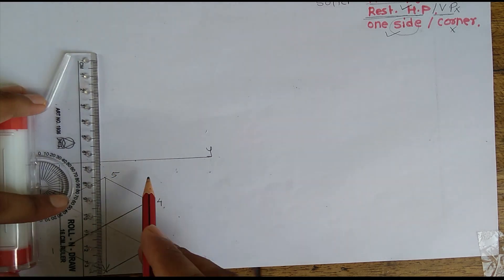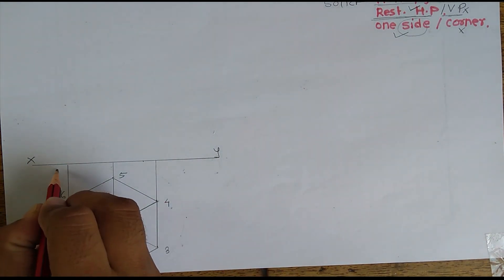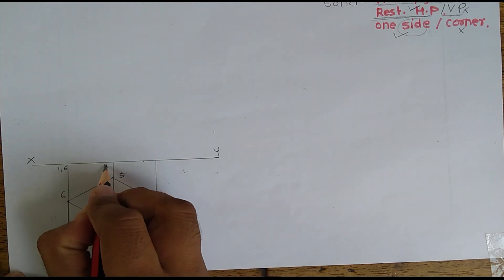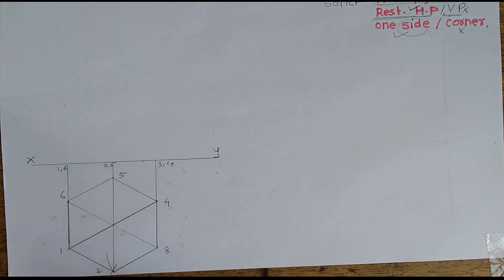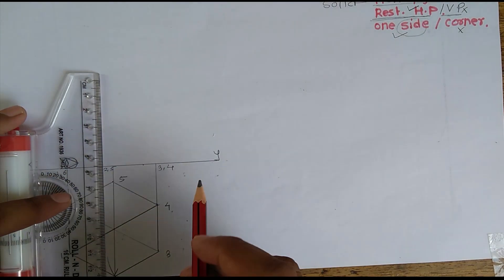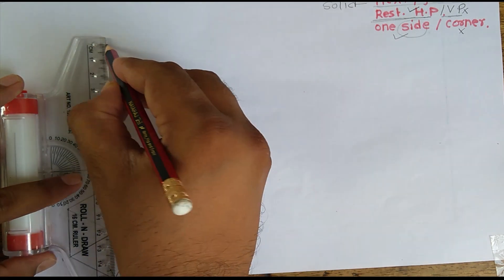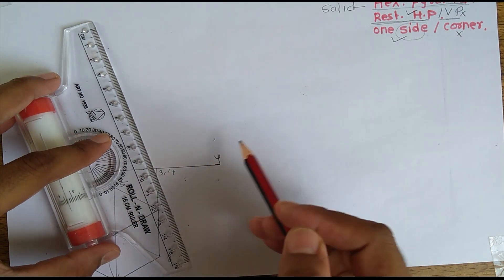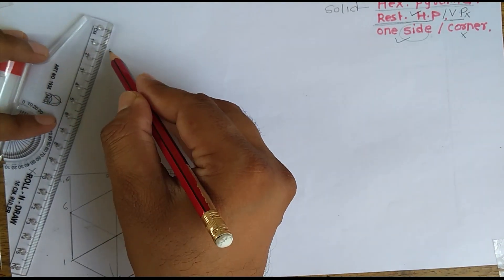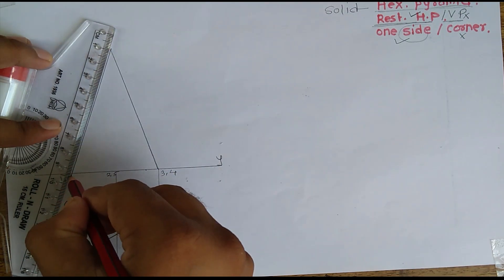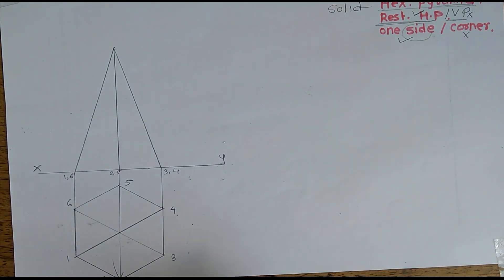I have taken the first projection, then second, then third. After taking the projections, I will give naming: one and six here, this will be two and five, this will be three and four. Next step is to take the axis dimension — axis height is given as 80 mm, so I have to mark that and mark the apex of this pyramid, then join the apex to the base with the edges.